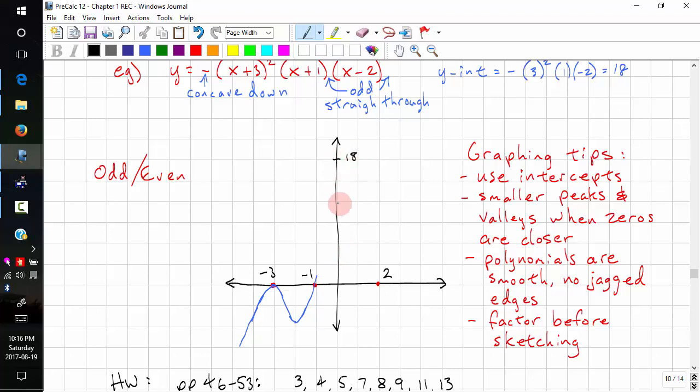This is 18, 12, and 6. So usually, the minimum or maximum is going to be roughly between the two intercepts. So I'm going to draw this, and the peak is just going to be to the right of this. And it's going to come down and through. And that completes the graph.